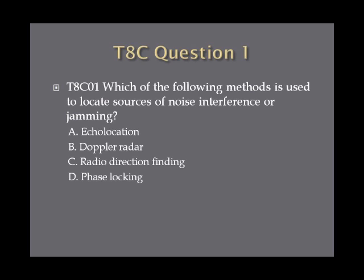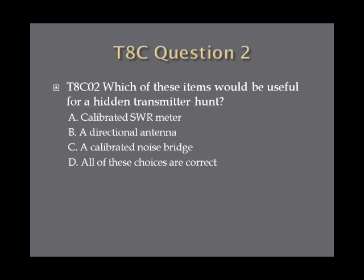Question one: Which of the following methods is used to locate sources of noise interference or jamming? A, echo location. B, Doppler radar. C, radio direction finding. Or D, phase locking. Question two: Which of these items would be useful for a hidden transmitter hunt? A, calibrated SWR meter. B, a directional antenna. C, a calibrated noise bridge. Or D, all of these choices are correct.